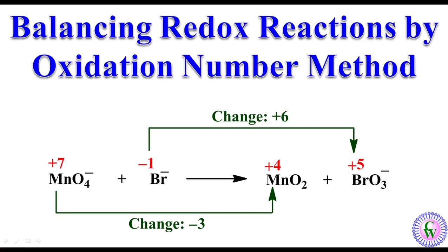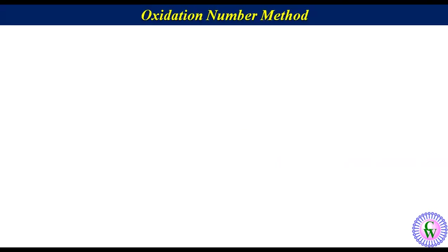Hello friends. The topic of today's discussion is Balancing Redox Reactions by Oxidation Number Method. There are two methods for balancing redox reactions: the first is the half reaction method and the second is the oxidation number method. In the previous lecture we already discussed in detail the half reaction method, so in this lecture we are only going to focus on the oxidation number method.